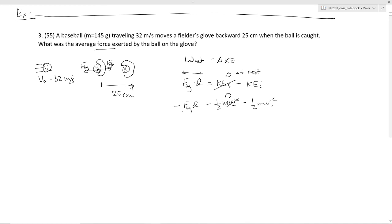So then you see we can solve this for the force. It's going to equal negative one half mv initial squared divided by negative d becomes positive. And we can put in our numbers here. So the mass will be 0.145 kilograms. The initial velocity is 32. And the distance that it goes through is 0.25.